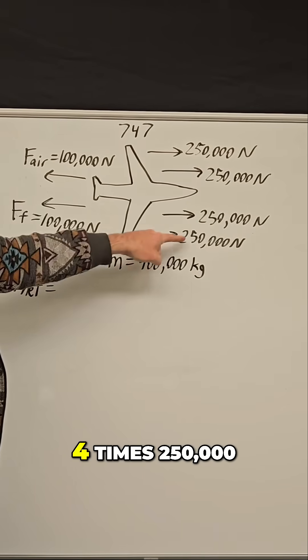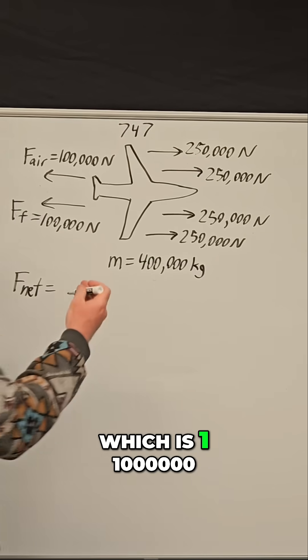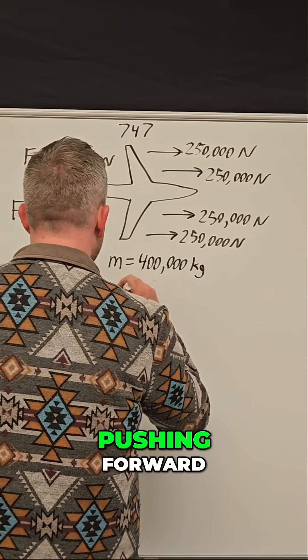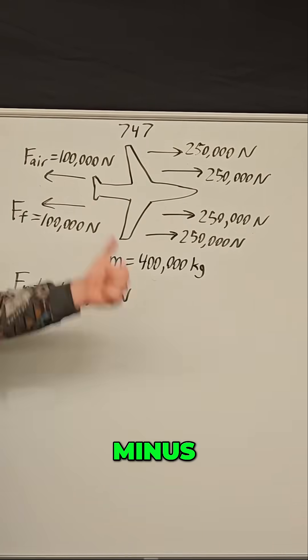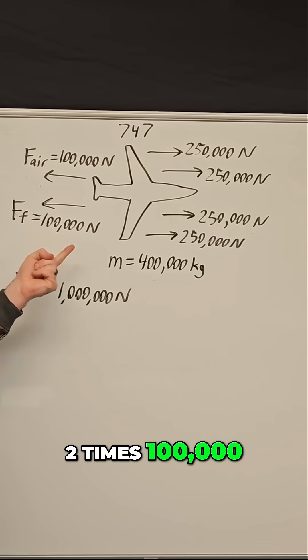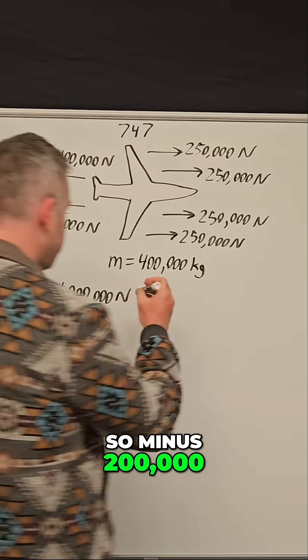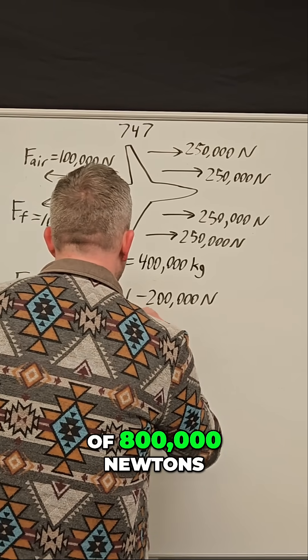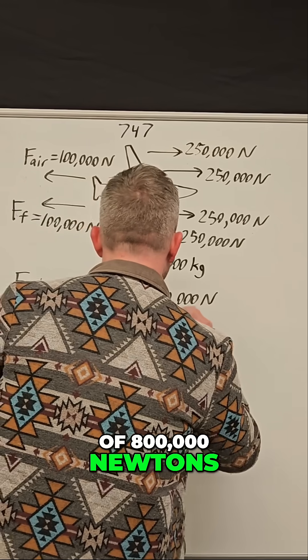We have four times 250,000, which is one million newtons pushing forward, minus two times 100,000. So minus 200,000 gives us a net force of 800,000 newtons.